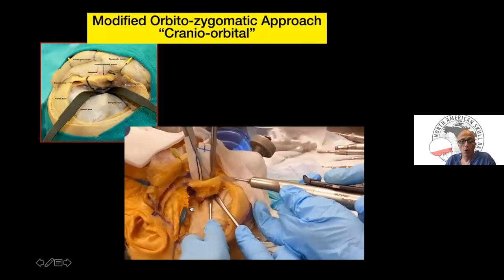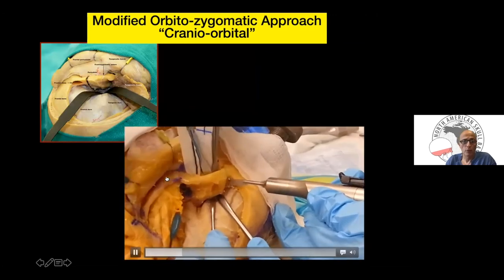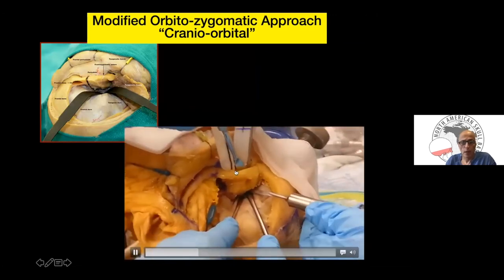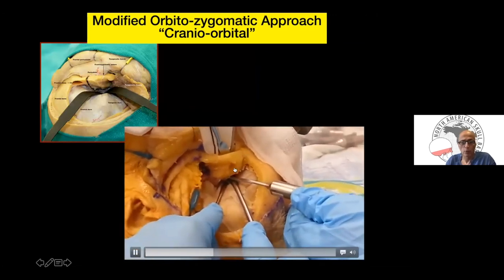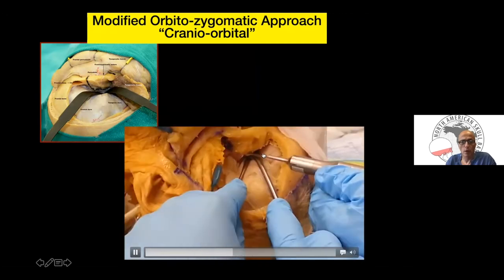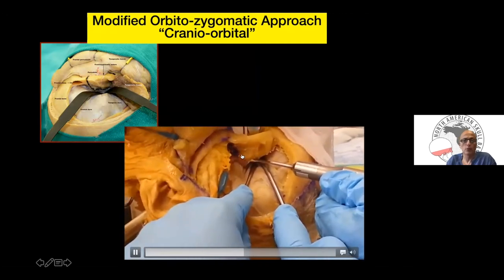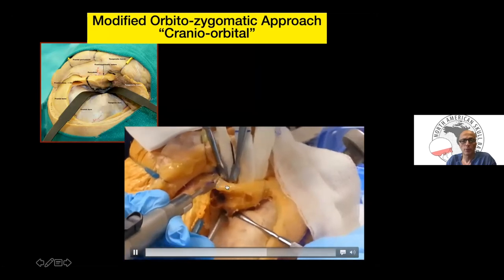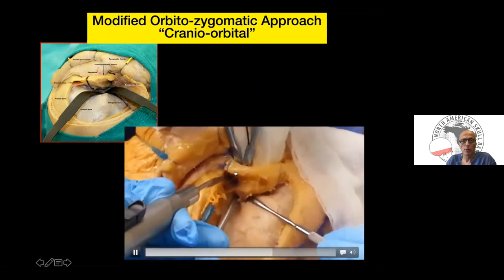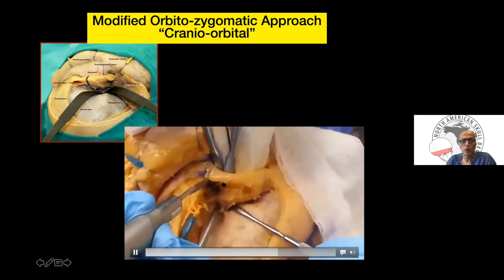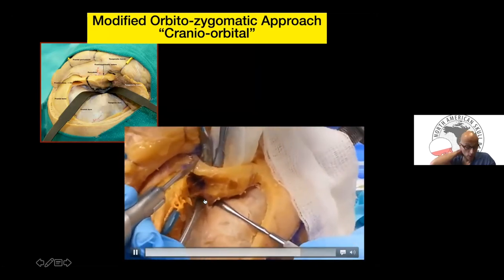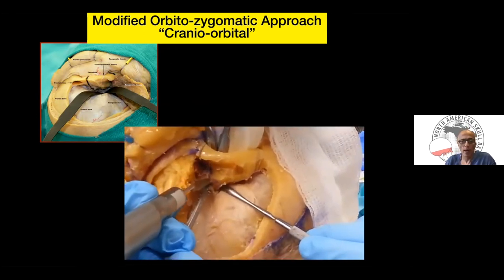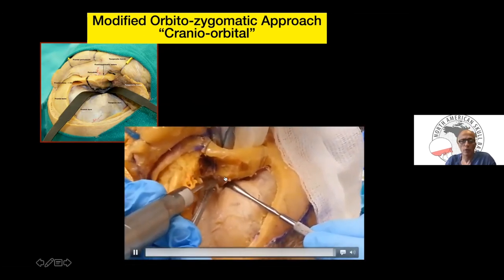This is the modified OZ — not a full OZ — showing one cut in the superorbital bar, a horizontal cut in the orbital roof, and another cut lateral to the frontozygomatic suture connecting to the inferior orbital fissure. This modified version is the most commonly used; the full OZ is rarely needed nowadays.